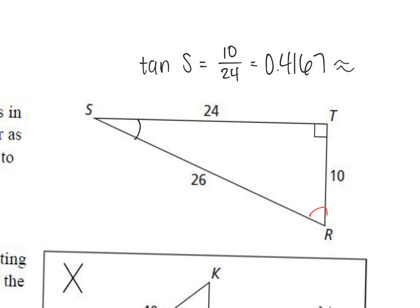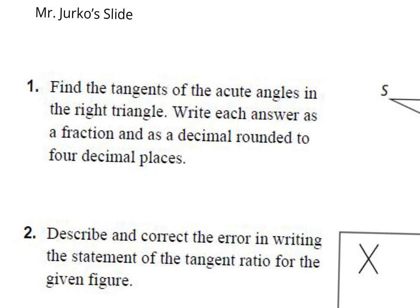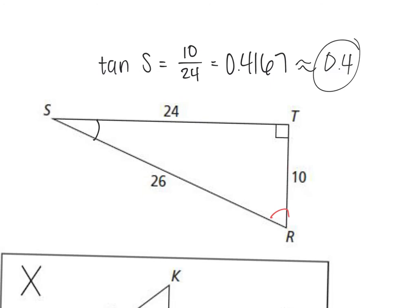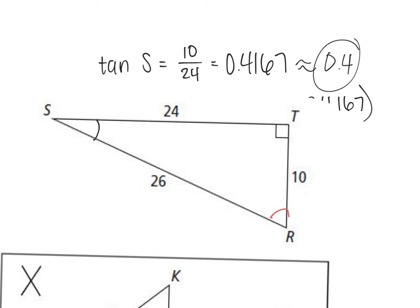We are doing the tangent of S. Did it ask us to find the angles? It says find the tangents of the acute angles. So all we need to find is the tangent of S. If we wanted to find the actual angle, we would take the tangent inverse of that number. But it's not asking us for the actual angle — it's asking us for the tangent. So we're going to leave it as 0.4167.